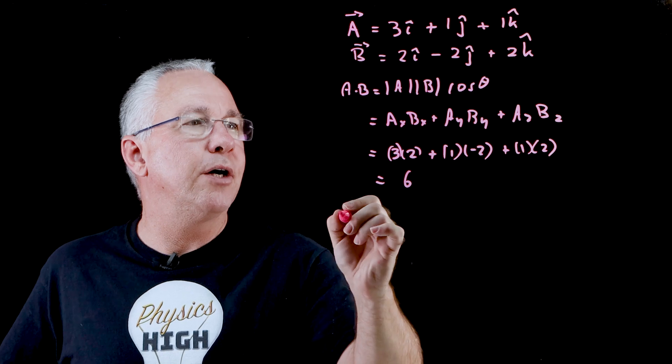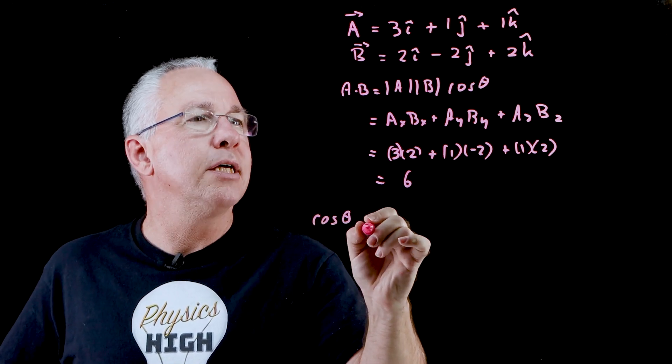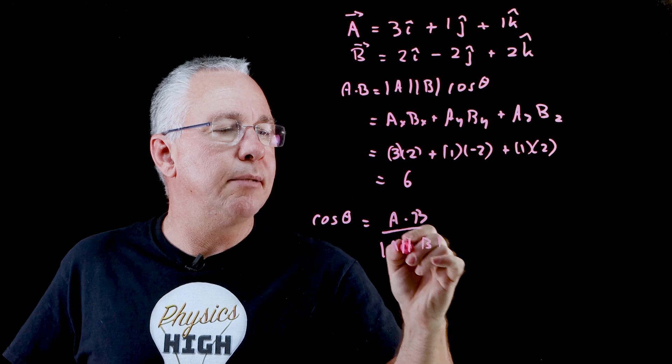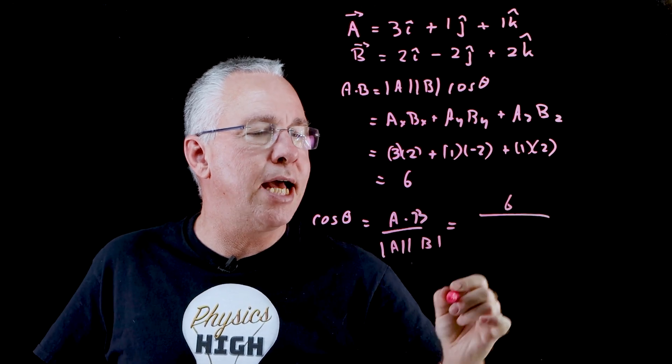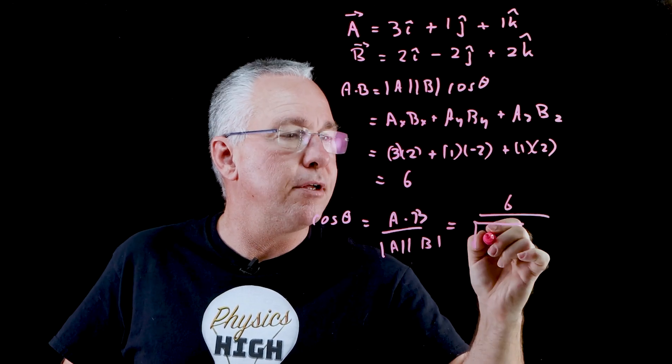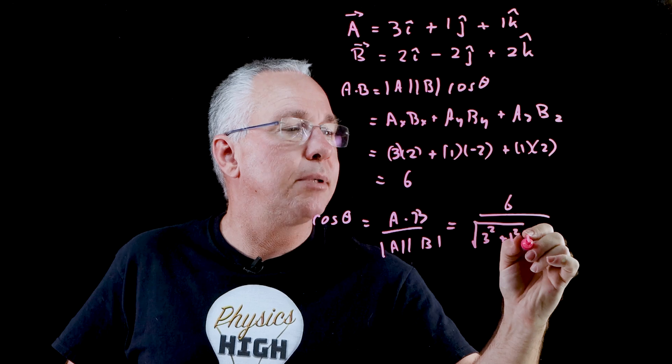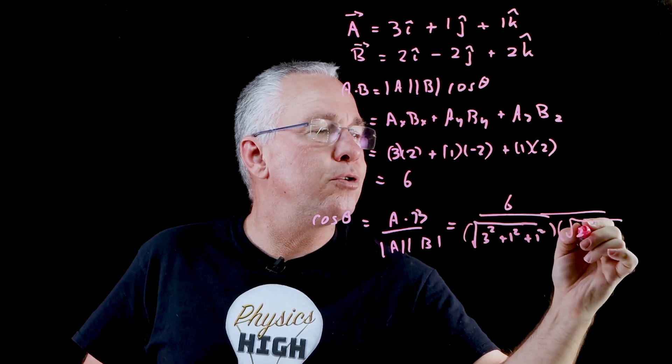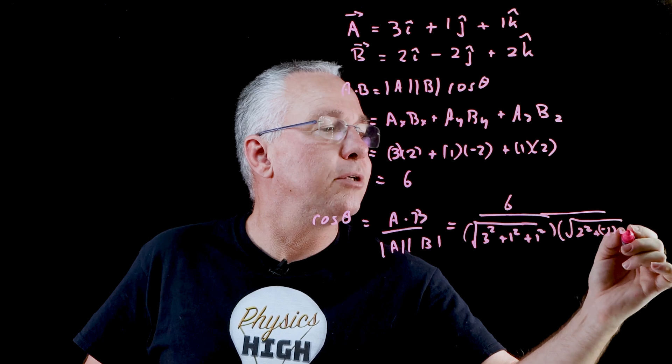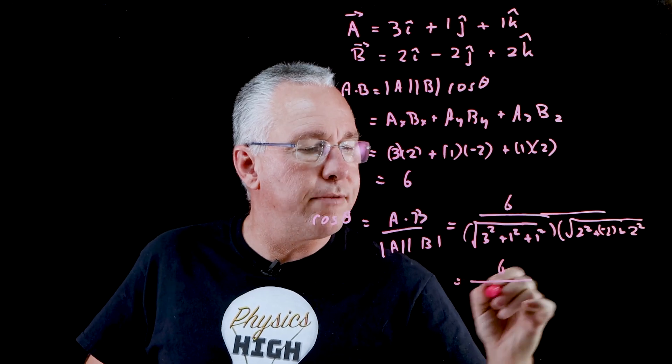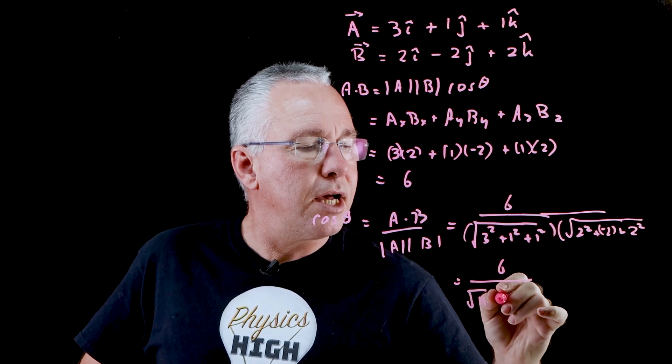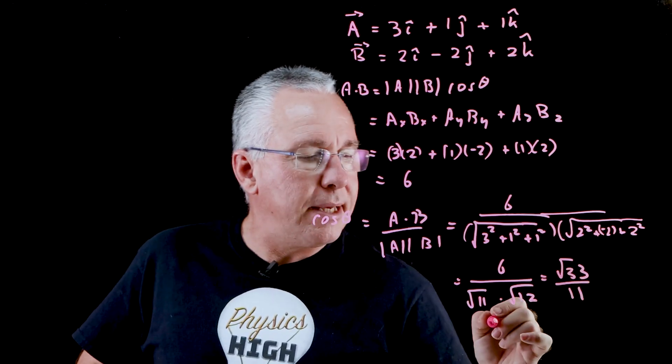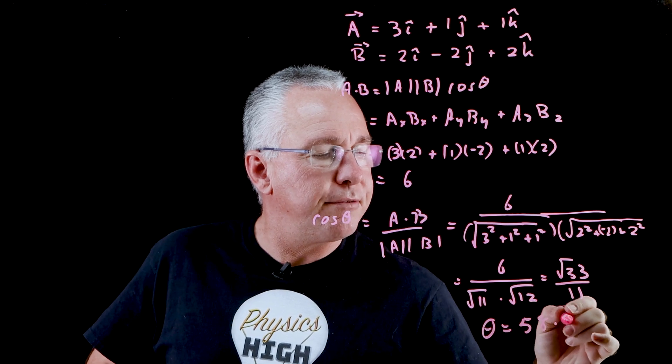But what about the angle? We know that the cosine of the angle is equal to A dot B divided by the absolute values of A and B. So that means it's that 6 that we just calculated. The actual magnitude of A equals the square root of 3 squared plus 1 squared plus 1 squared multiplied by the square root of 2 squared plus negative 2 squared plus 2 squared. So that ends up being 6 over the square root of 11 times the square root of 12, which ends up being root 33 over 11. And that means our angle equals 58.5 degrees.